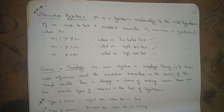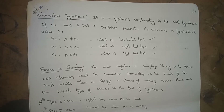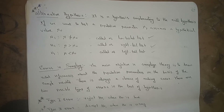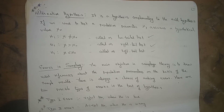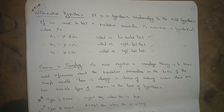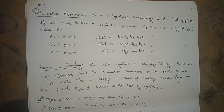P(reject H₀ | H₀ is true) = α, and P(accept H₀ | H₁ is true) = β. Alpha is called producer's risk because a good lot is getting rejected — that is Type 1 error. Beta is called consumer's risk because a bad lot is getting accepted — that is Type 2 error.